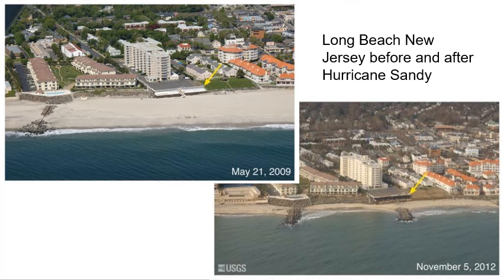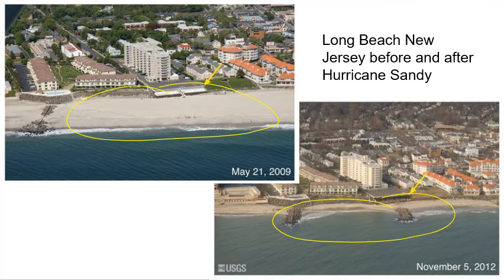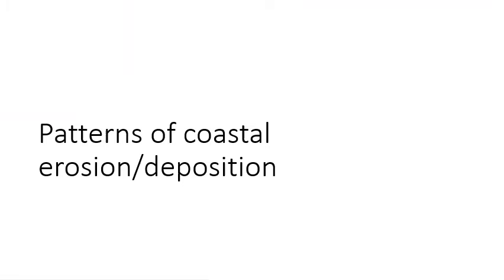This is Long Beach, New Jersey after Hurricane Sandy. You can see they had a nice, wide, sandy beach with lots of sediments. The hurricane came along and they were gone — which is not great news for the people that want to go to Long Beach and play on the beach.